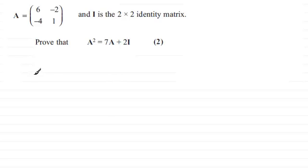So we'll start with A² first. For A², A times A in other words, we have the matrix [6, -2; -4, 1] multiplied by [6, -2; -4, 1]. I'm assuming you're familiar with multiplying matrices together.